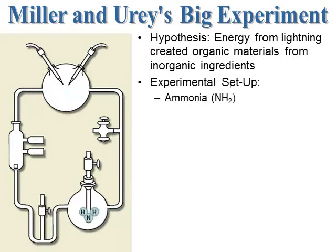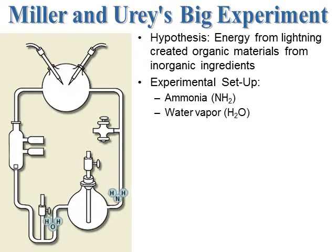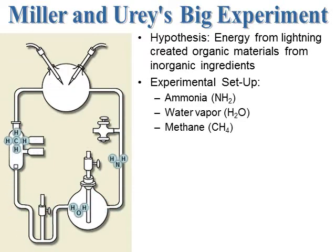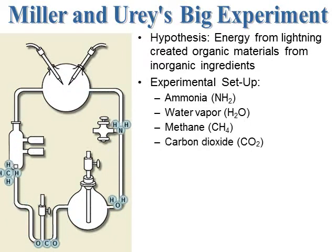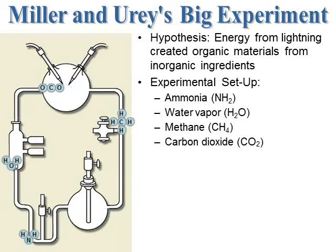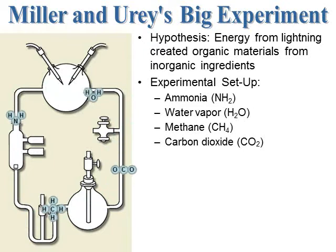They set up a gas chamber and added various gases. They circulated ammonia (NH3), water vapor (H2O), and methane (CH4) through the gas chamber. And one more — carbon dioxide (CO2). They circulated carbon dioxide, methane, water vapor, and ammonia — the very gases thought to be present in the atmosphere of ancient Earth billions of years ago.